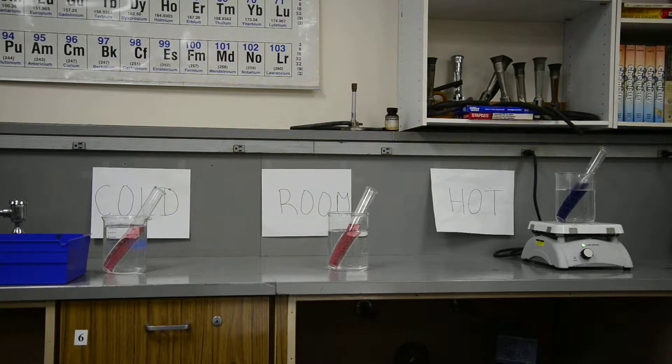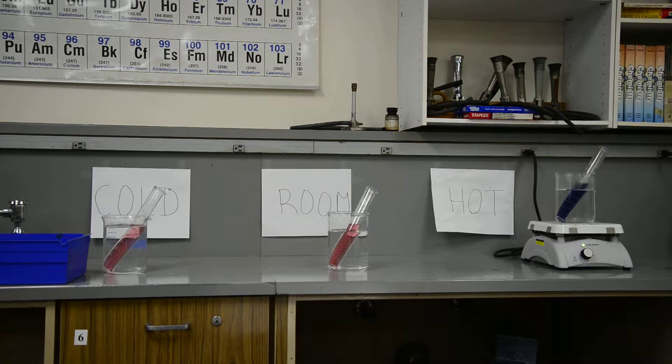The stuff that you see on the far right on the hot plate is close to 100 degrees centigrade. Over on the left, we have ice-cold water, and in the center we have room temperature water.